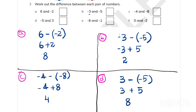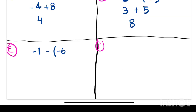Though it looks tricky, it's very easy — it just requires a little bit of practice. Part E has minus 1 and minus 6. Minus 1 is obviously bigger, then plus 6. Minus plus gives minus, so we subtract and get 5.